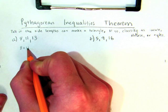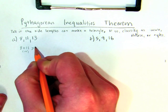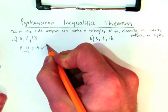I found 8 plus 11 is 19. That's 19, which is greater than 13. So yes, it is a triangle.